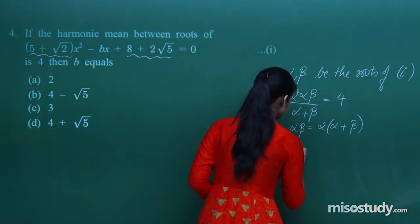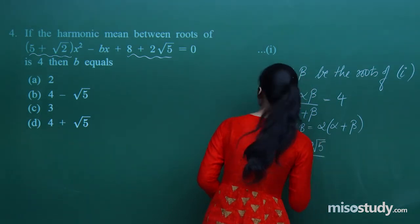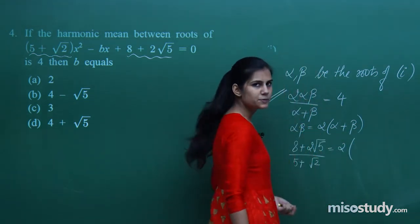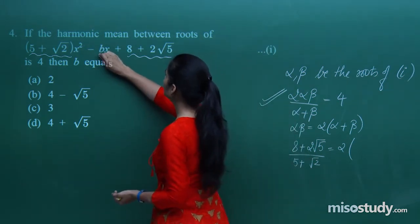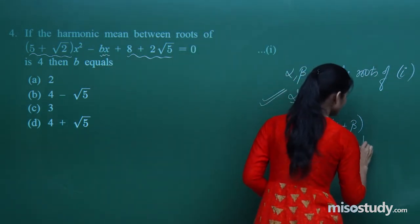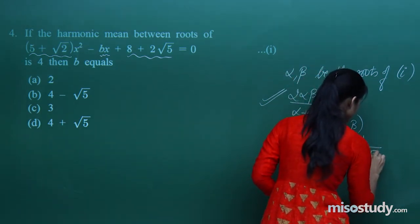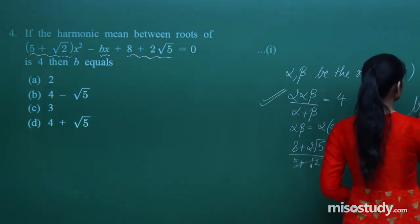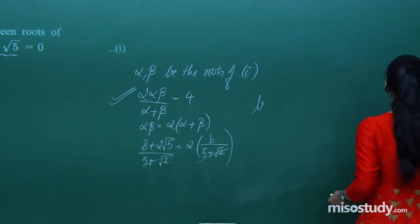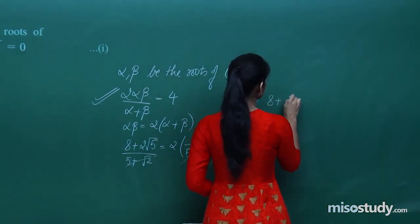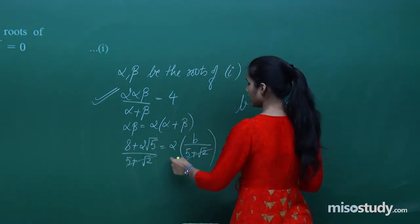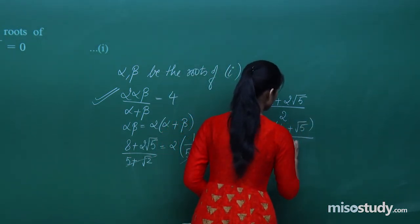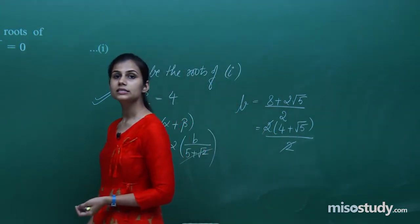And twice the sum of roots is 2 × [(-b)/(5+√2)]. The (5+√2) cancels, so b = (8 + 2√5)/2. Taking out factor 2: b = (4 + √5)/2 × 2 = 4 + √5. So the answer is b = 4 + √5.